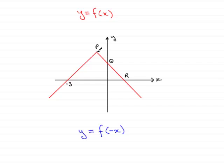So the point P for instance here is going to be mirrored across the y-axis, say to a point about here. The point Q being on the y-axis is invariant, so that's going to stay the same.